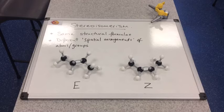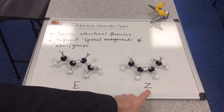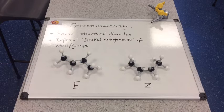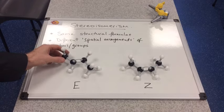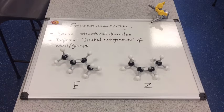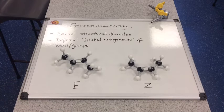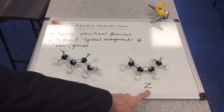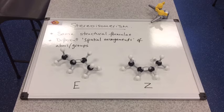So these are stereo-isomers. The system we use to name the isomers is known as the E/Z system. The letter E is written underneath one isomer, and Z underneath the other. E comes from the German word 'Entgegen', which means opposite — the methyl groups are on opposite sides of the double bond. And Z comes from the German word 'Zusammen', meaning together — because the two methyl groups are on the same side of the double bond.